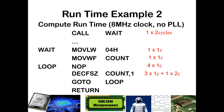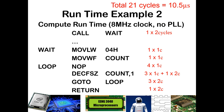The decrement happens a total of four times: three times without skipping at one cycle each, and once with skipping at two cycles. Again, the go-to executes three times at two cycles each. And the return executes one time at two cycles. Adding that all together: 2+1+1+4+5+6+2 = 21 cycles, which works out to 10.5 microseconds.